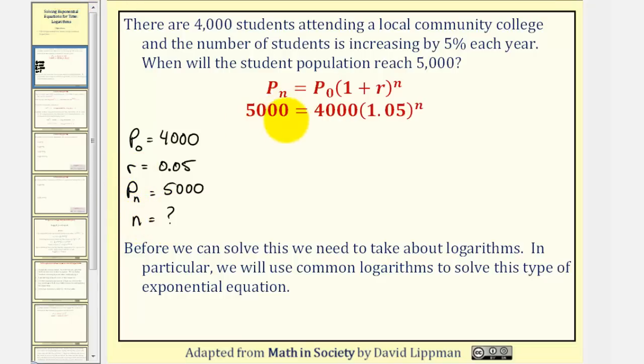So if we set this up, this would give us the equation 5,000 = 4,000(1 + 0.05)ⁿ, simplifying one more time gives us 5,000 = 4,000(1.05)ⁿ. But because the unknown is in the exponent position, we need to talk about logarithms. In particular, we will use common logarithms to solve this type of exponential equation.